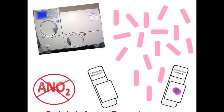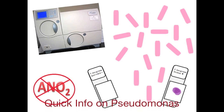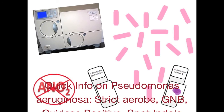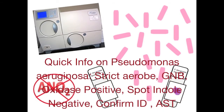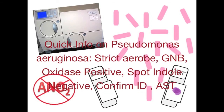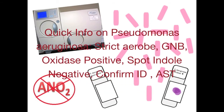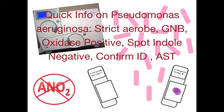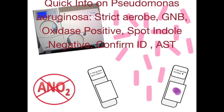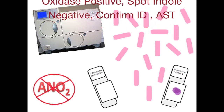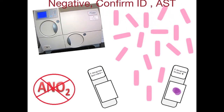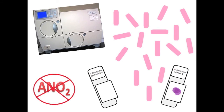Just a quick note on Pseudomonas aeruginosa: it is a strict aerobe, Gram-negative bacilli, oxidase positive, and indole negative. You would perform a final identification test to confirm the ID, such as API20E or VITEK. AST is generally performed on fluoroquinolones, cephalosporins, aminoglycosides, and carbapenems, as these antibiotics are commonly used to treat Pseudomonas aeruginosa infections.